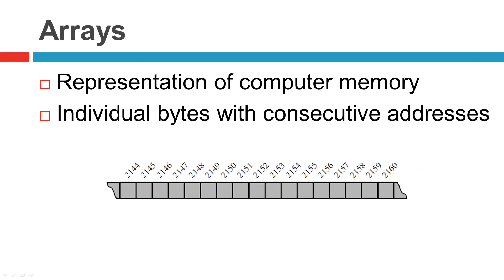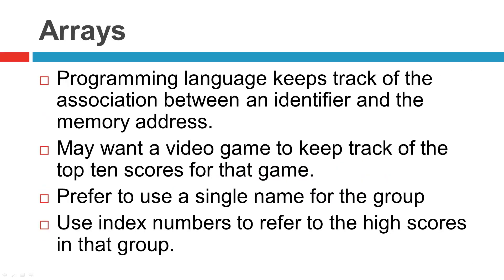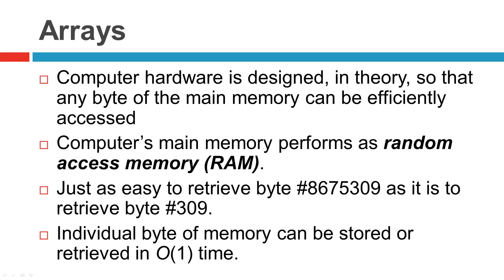Here's a drawing example of low-level computer memory: individual bytes with consecutive addresses. Despite the sequential nature of the numbering system, the computer hardware is designed so that any byte of main memory can be efficiently accessed based upon its memory address. In this sense, we say that a computer's main memory performs as random access memory, RAM. It's just as easy to retrieve byte number 8675309 as byte number 309. Each individual byte of memory can be stored or retrieved in constant time.